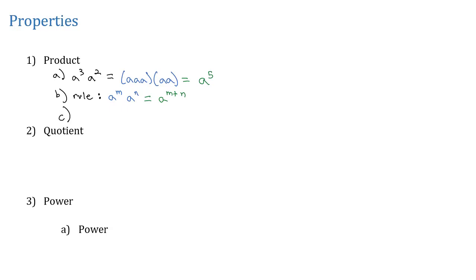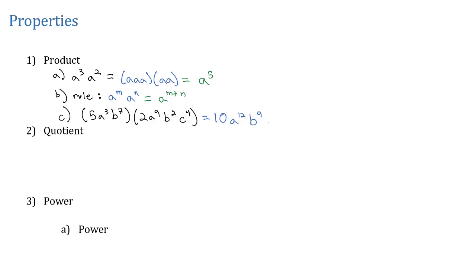For example, if I had five a cubed b to the seventh times two a to the ninth b to the second c to the fourth, we can multiply five times two to get ten. For the a's, we add three plus nine to get a total of twelve. For the b's, we add seven plus two to get a total of nine, and c to the fourth. That's the product rule.